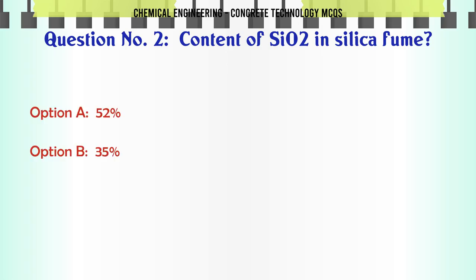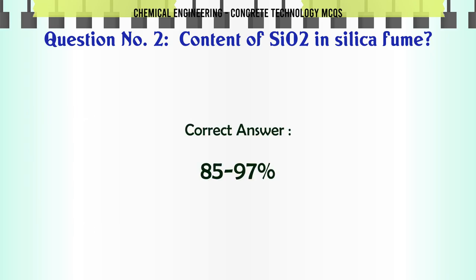Content of CO2 in silica fume. A. 52. B. 35. C. 21.9. D. 85.97. The correct answer is 85.97.